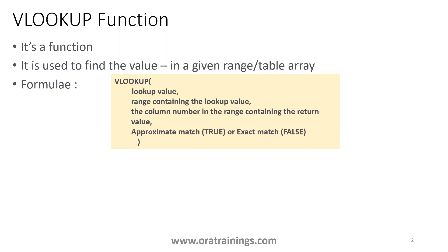The formula has four parameters. The first is the lookup value, the second is the range — the table where you search for that lookup value. The third is the column index — what you want to fetch from that range. The last is the match type: false for exact match, true for approximate match.